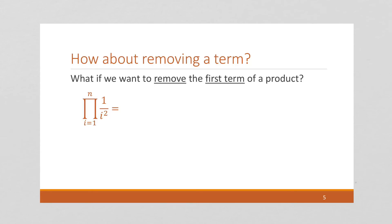What if we want to remove the first term of a product? Well, once again, as always, we want to expand. So let's expand this. So this is going to be, we have our product variable as i, and we start i at i equals 1. So I'm going to have 1 over 1 squared times 1 over 2 squared, and I could simplify and call that 1 times 1 fourth if I wanted, but there's no real need.